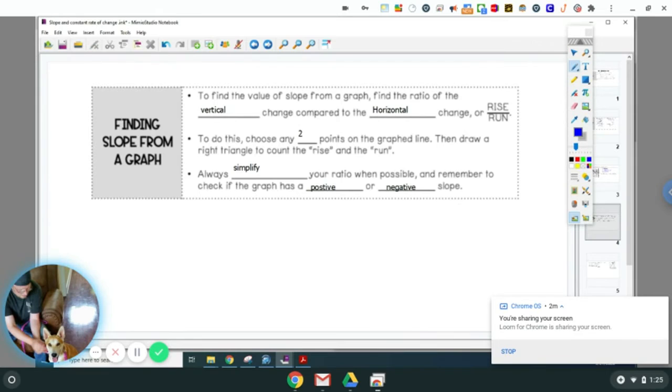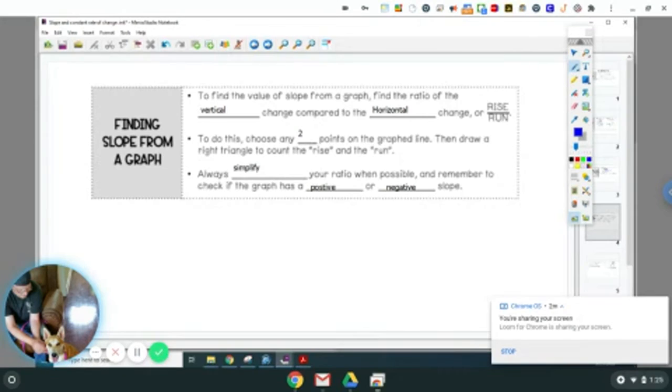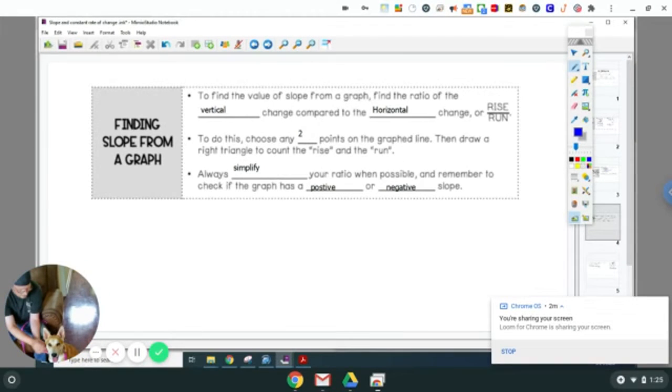So to find the value of the slope from a graph, you have to find the ratio of the vertical change compared to the horizontal change, or as we say, rise over run. To do this, choose any two points on the graph, and then draw a right triangle to count the rise and the run. Also, simplify your ratio when possible, and remember to check if the graph has a positive or negative slope.